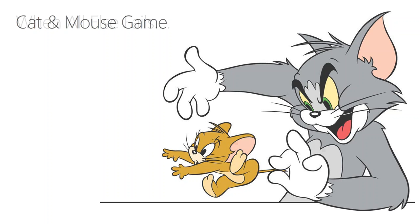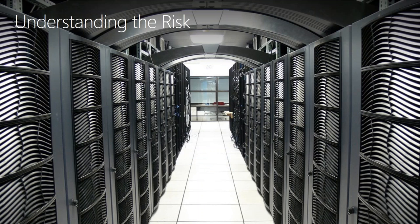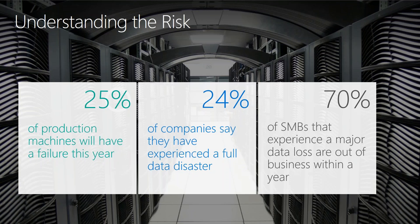So what do we do when all else fails? We need to have a good business continuity solution. It's not just backup. Looking at some of the risks even outside of IT security: 25% of production machines will have a failure this year — it doesn't matter if it's six months old or six weeks old. A server can fail, a desktop can fail, you could get hacked, you could get a virus that wipes out your data. 24% of companies have had a full data disaster, meaning they lost data and were not able to recover it. And 70% of small businesses that experience one of those major data losses are out of business within a year.